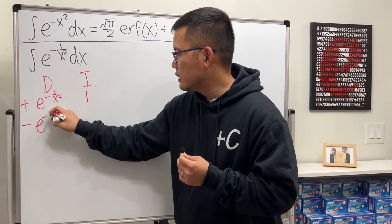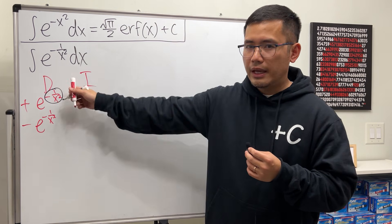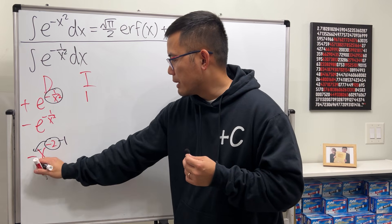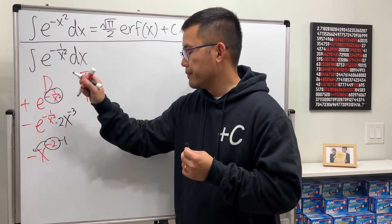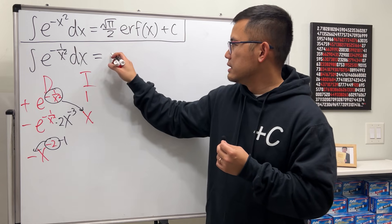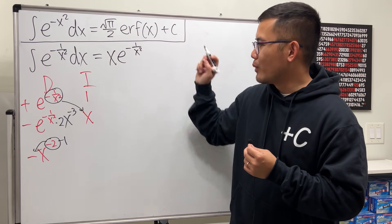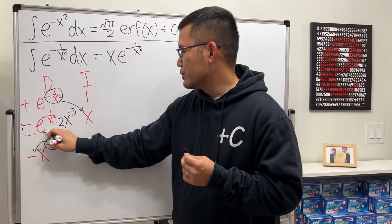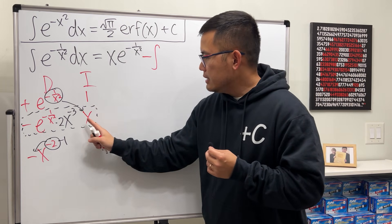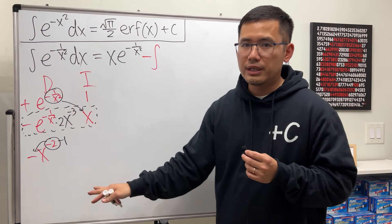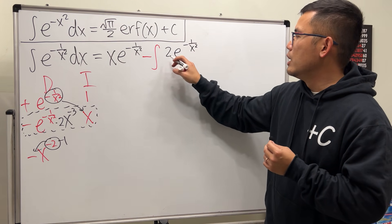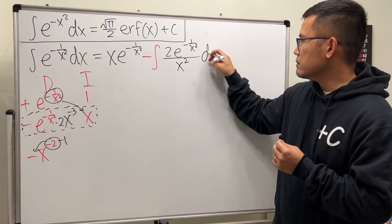Differentiating e to the negative 1 over x squared, don't forget the chain rule — that gives us negative x to the negative 2. Bringing the power to the front: minus 1, so that's positive 2, x to the negative 3. Integrating 1 gives x. For the first part of the answer, it's x times e to the negative 1 over x squared. Then we multiply the remaining pieces and put them inside an integral with a minus sign: minus the integral of 2e to the negative 1 over x squared over x squared.